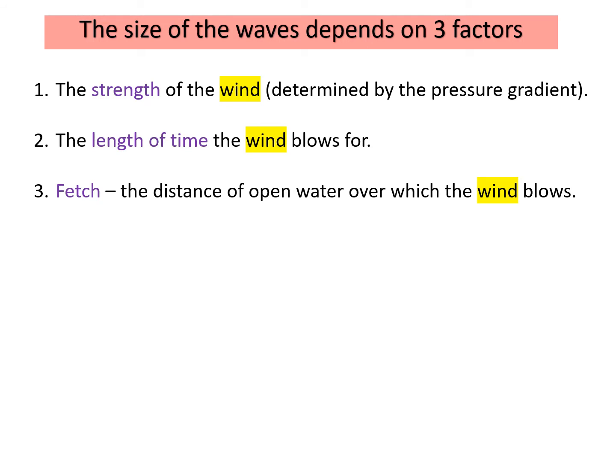There are three factors that determine the size of waves. The first is the strength of the wind — the stronger the wind, the larger and more powerful the waves we are going to get. This is determined by the pressure gradient, which is the pressure difference between two places. Winds blow from high to low pressure, and where there is a large difference, we get stronger winds.